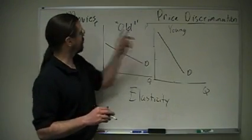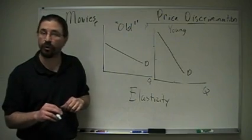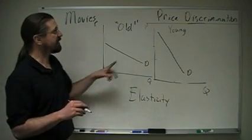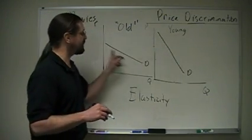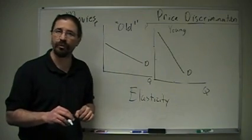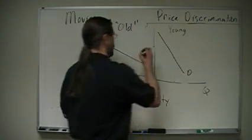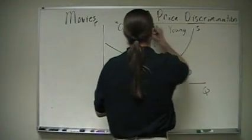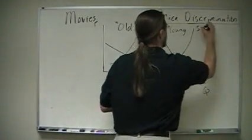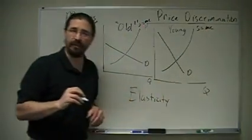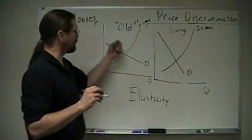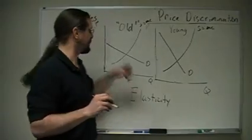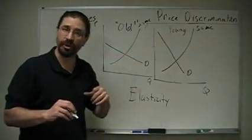But what these monopolists who are running movie theaters have figured out is that they can go ahead and analyze the demand for the two different age groups and figure out, okay, my supply is exactly the same. The marginal cost that I have whether I'm showing a movie to an old person or a young person is exactly the same. So those look the same.